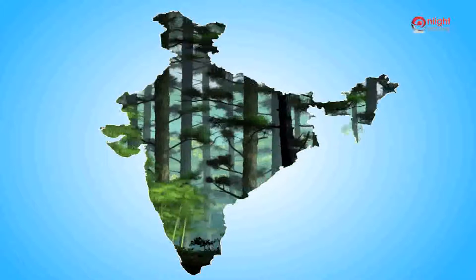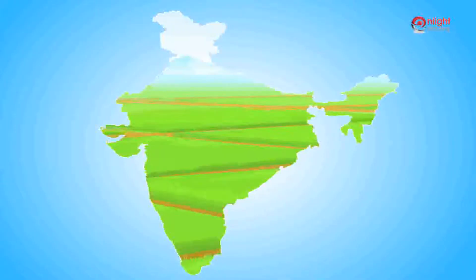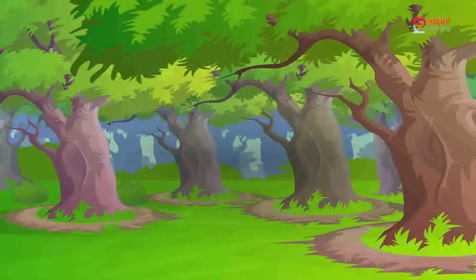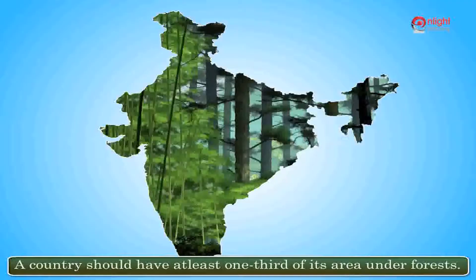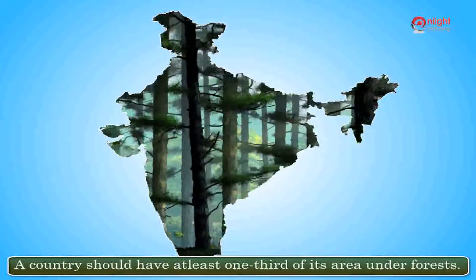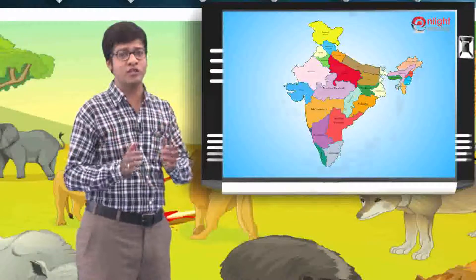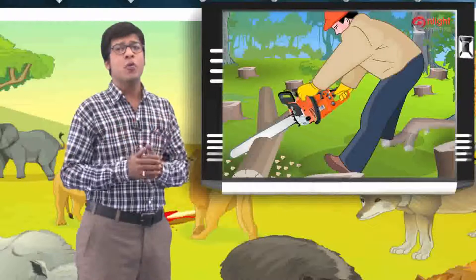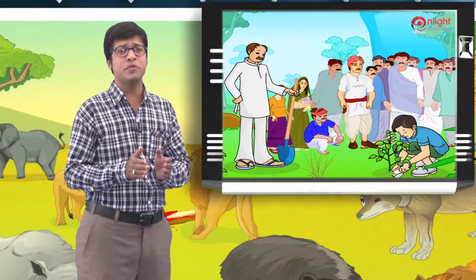Conservation of forests: Forests are the second largest land use in India, next to agriculture, and play an important role in the economy of a country. A forest is a growing, changing community made up of many different plants and animals that interact with each other in many ways. A country should have at least one third of its area under forests. Unfortunately, in India, we don't even have one fourth of the land under forests. We have destroyed our forests thoughtlessly, and it is our duty to make up for the damage done. We must stop cutting trees and conserve our forests.